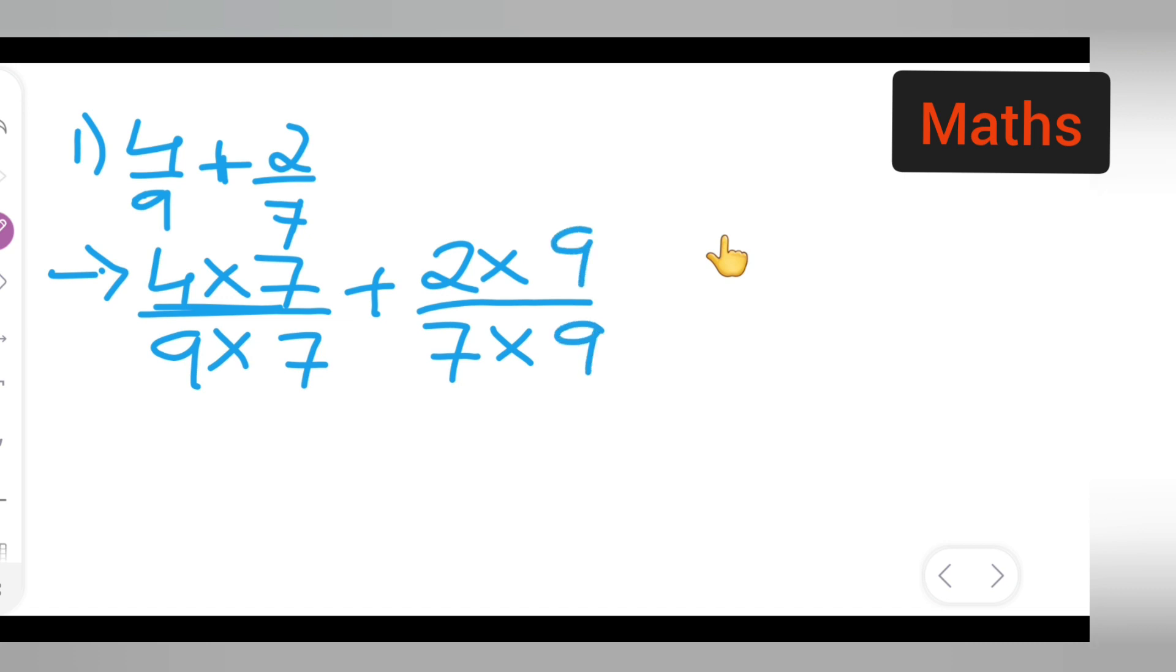Basically what y'all are going to get is 4 times 7 is 28 upon 9 times 7 is 63. The answer is 28 upon 63 plus 2 times 9 is 18 upon 7 times 9 is 63. So 18 upon 63.